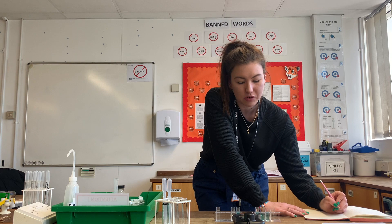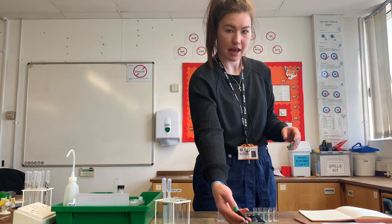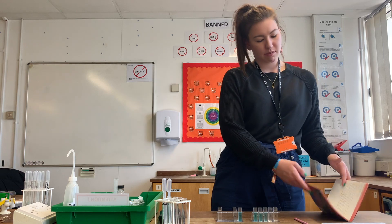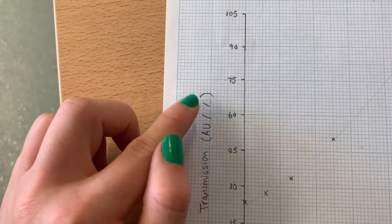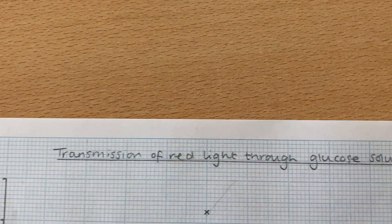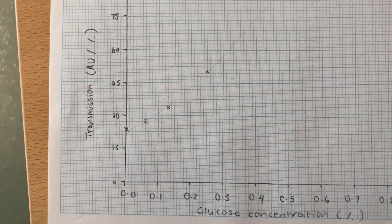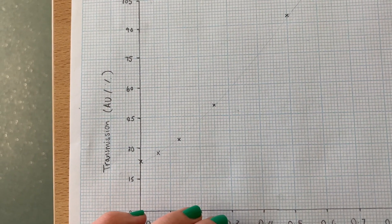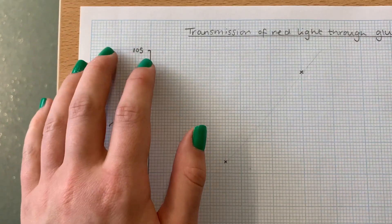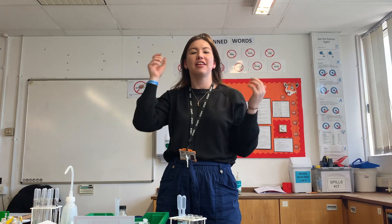I'm just writing down my transmission values in a quick raw data table. Now I have my transmission values recorded, I can plot my calibration curve. We have glucose concentration along the bottom and transmission on the side in arbitrary units or percentage. I've added a title at the top of my graph and plotted my points and drawn a line through them. The last thing to do is find where my unknown glucose concentration transmission value of 97.7 sits - I read along and then read down, and that tells me my final glucose concentration.